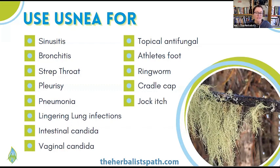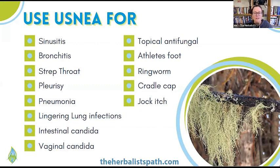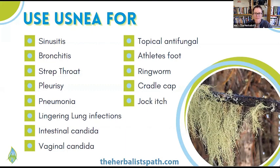You can also use usnea for bacterial vaginosis and streptococcus. You could take anywhere from 30 to 90 drops of these extracts up to five times daily — solo or in the compounds mentioned. You could also use usnea as an antifungal agent for treating intestinal and vaginal candida. Combine it with a strong antibacterial herb like Oregon grape or Berberis species to prevent candida overgrowth that may happen due to conventional antibiotics. Take 30 to 90 drops three times daily for two to four weeks right after using antibiotics.